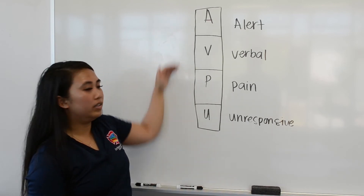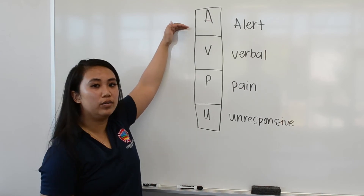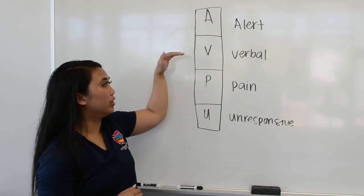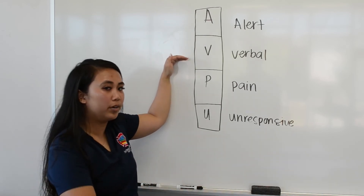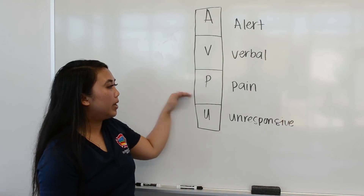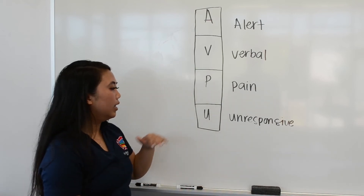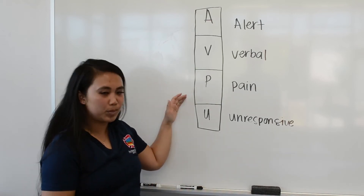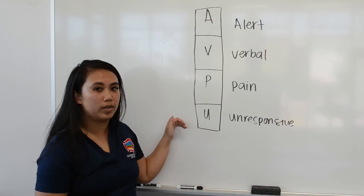You're going to go down in this order. If they're not tracking you or looking at you, they're not alert. You go verbal — hey sir, ma'am, are you awake? Then pain — you're going to give them a trap squeeze. And if they don't respond to pain, then they're unresponsive.